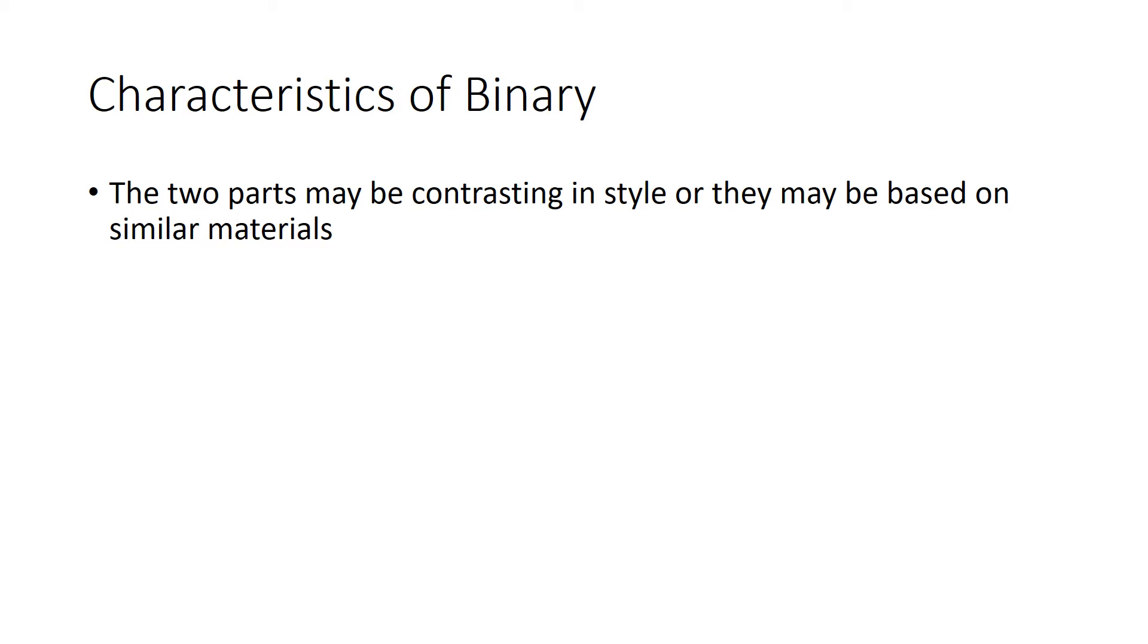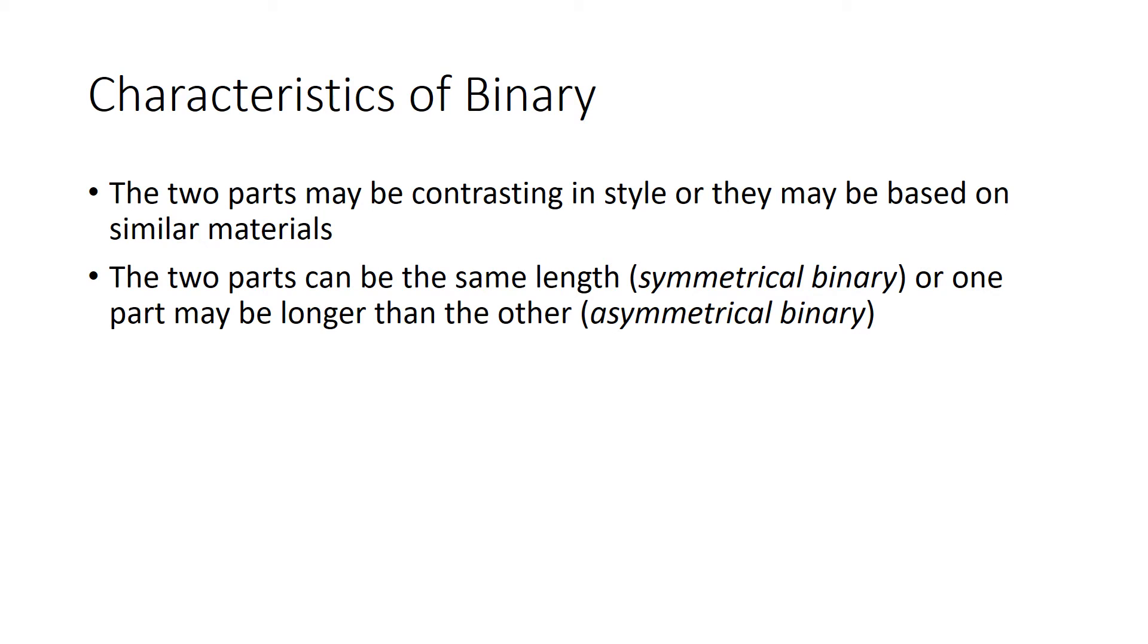Now here are some other characteristics in binary form. You might find that the two parts are quite contrasting, or they might have similar materials. They might even be based on the same thematic ideas. The two parts can be about the same length, and we call that symmetrical binary. Or one part might be longer than the other part, and then that's asymmetrical. Normally if they're not the same length, it's the B part that's the longer part.